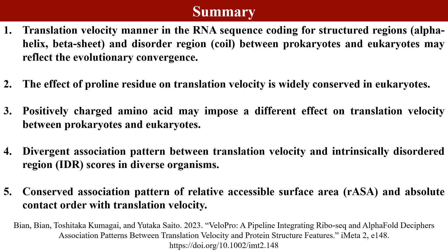Here is the summary of our study. Translation velocity patterns in RNA sequences coding for structured regions and disordered regions differ between prokaryotes and eukaryotes, which may reflect evolutionary convergence. The effect of proline residues on translation velocity is widely conserved in eukaryotes. Positively charged amino acids may impose different effects on translation velocity between prokaryotes and eukaryotes. We also observed a divergent association pattern between translation velocity and IDR scores in diverse organisms, but a conserved association pattern for relative accessible surface area and absolute contact order with translation velocity.